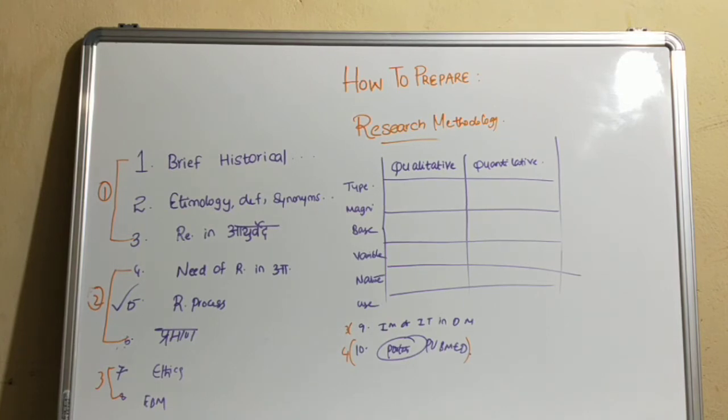Next, scope, need, utility and importance. In this heading, you can elaborate the Dinacharya, Ratricharya, Ritucharya, Sadvrtta Palana, Rasayana, Vajikarana. All these methods you can elaborate in this scope of research in Ayurveda. What I have said? Dinacharya, Ratricharya, Ritucharya, Sadvrtta Palana. And what is the need of this? Following this Dinacharya and all, you have to write in this need and scope of Ayurveda, research in Ayurveda.